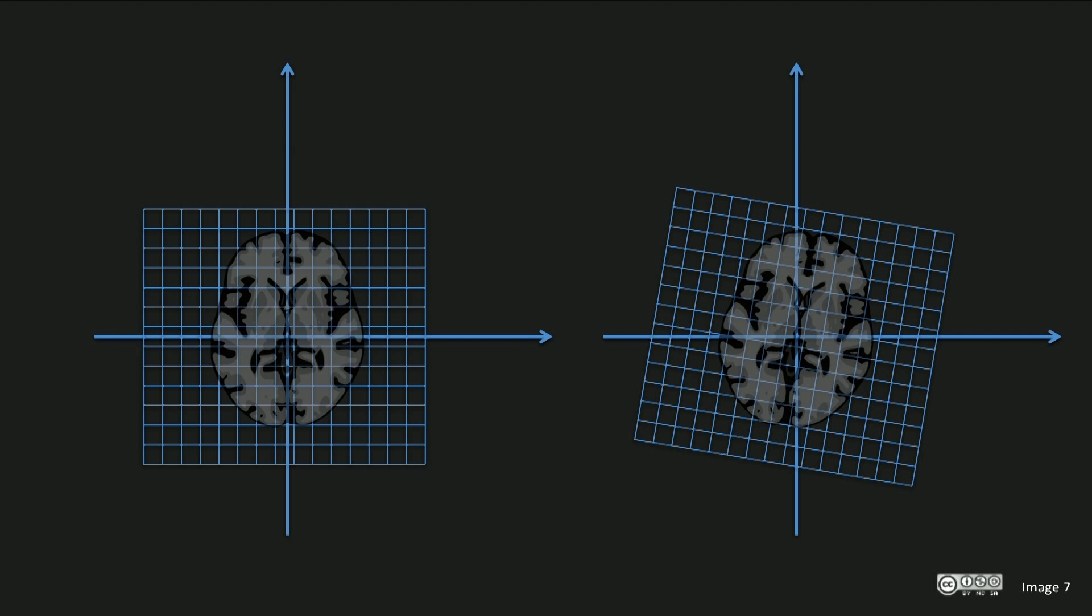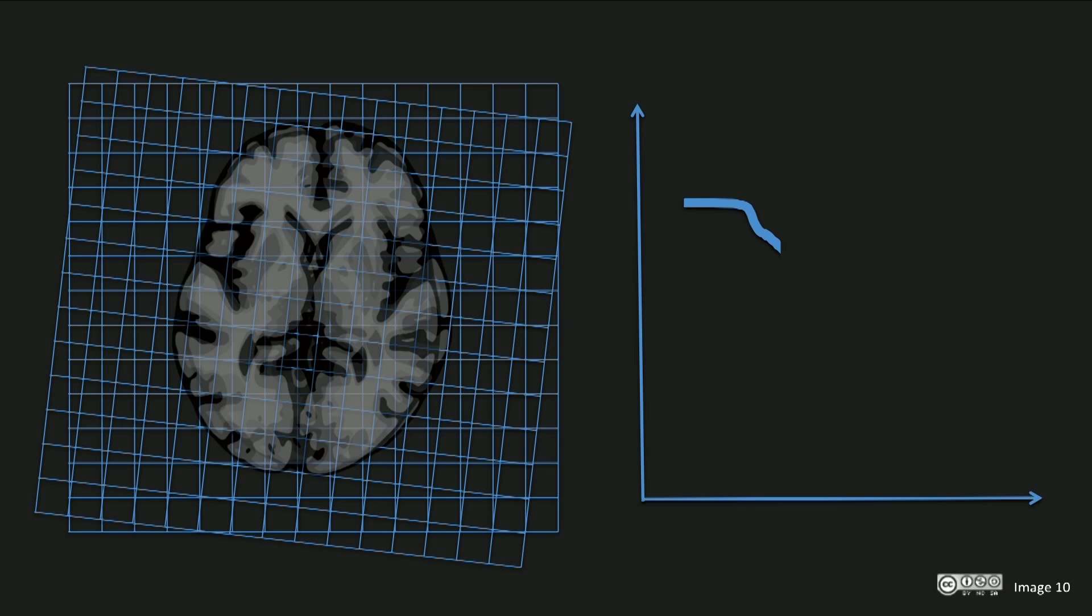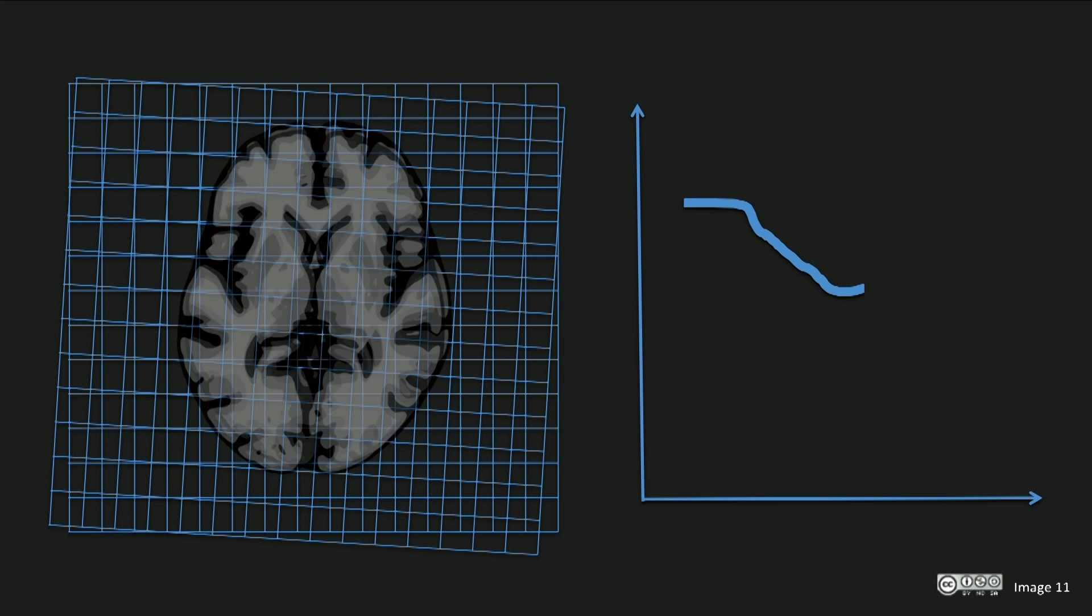Two of the most common functions are cross-correlation and mutual information. These functions are calculated between two overlaid images. In our example here, we will be calculating cross-correlation. The initial overlay will give us a cross-correlation value that we can plot. If we then rotate or translate our image closer to alignment, this value will change. As we continue this process, the plotted value of cross-correlation will decrease, sometimes sharply, sometimes only slightly, until an eventual match is found.